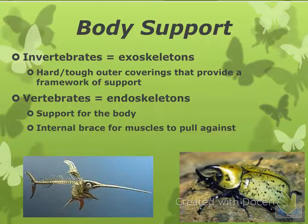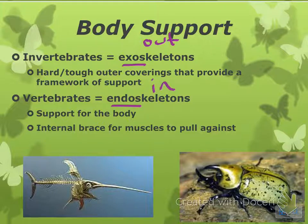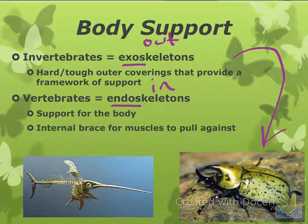So two types of body support. Invertebrates have something called an exoskeleton, while vertebrates have an endoskeleton. Remember, exo means out and endo means in. The exoskeleton is a hard, tough outer covering that provides a framework of support — this is why bugs crunch when you step on them. Vertebrates have their skeleton on the inside, which supports the body, and muscles are against these bones to give the structure of the body.